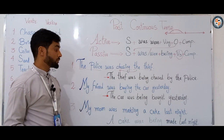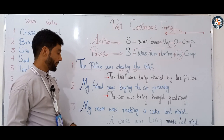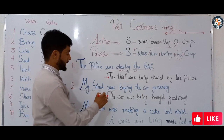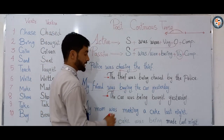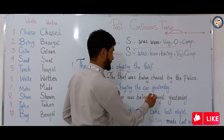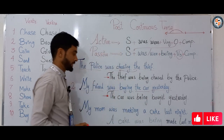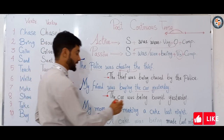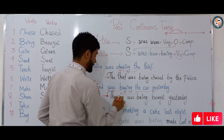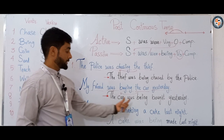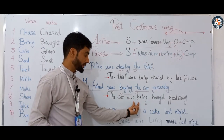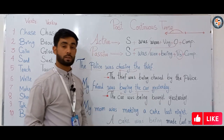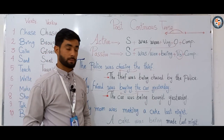In the second sentence: 'My friend was buying the car yesterday.' The subject is 'my friend,' 'was buying' is the verb form, 'the car' is the object, and 'yesterday' is a time expression — an adverb of time. When we change it to passive, this object comes to the beginning: 'The car was being bought yesterday.' We do not need to mention the subject.